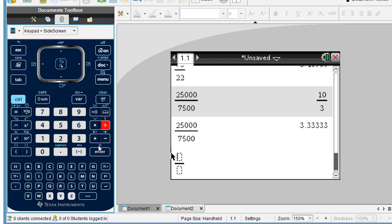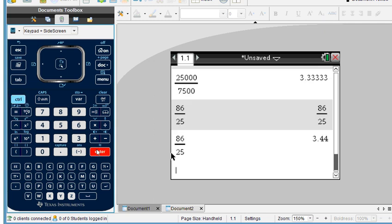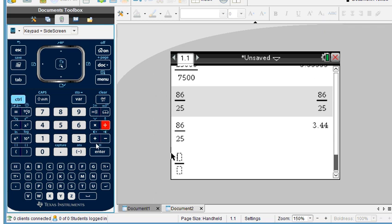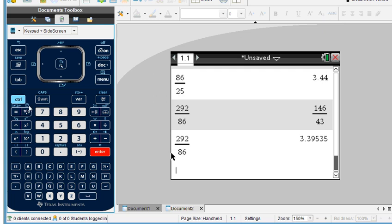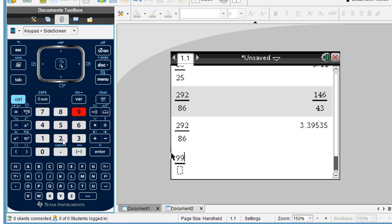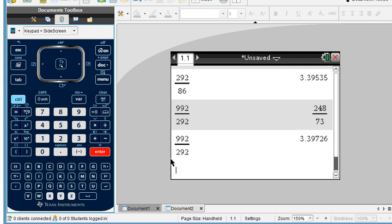Next, we're going to take 86,000 over 25,000, so I'll put 86 divided by 25. To get a decimalized version, 3.44. Next, we have 292 over 86, and we get 3.395. And the last one we're going to look at is 992,000 divided by 292,000, so we get 3.397.